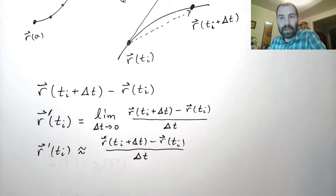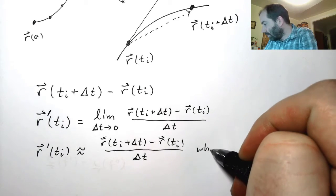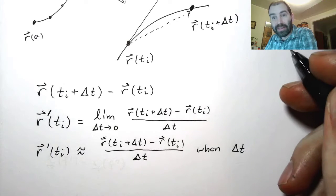Those are approximately equal when delta t is small.